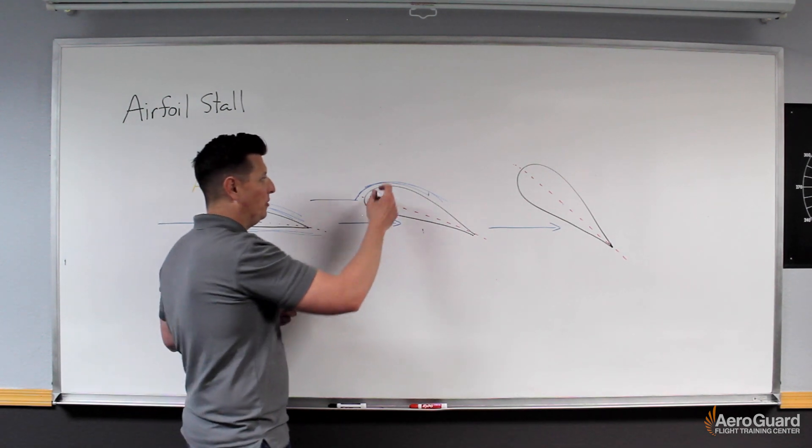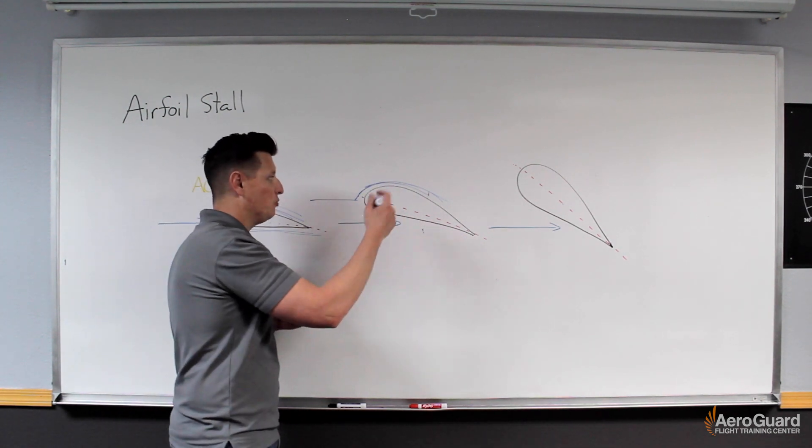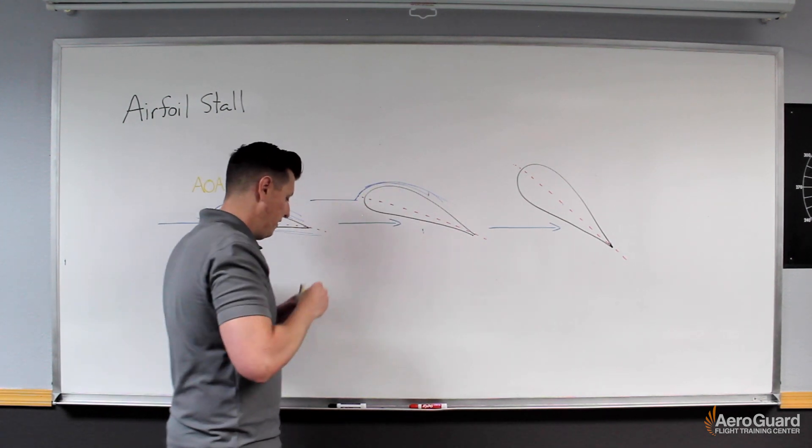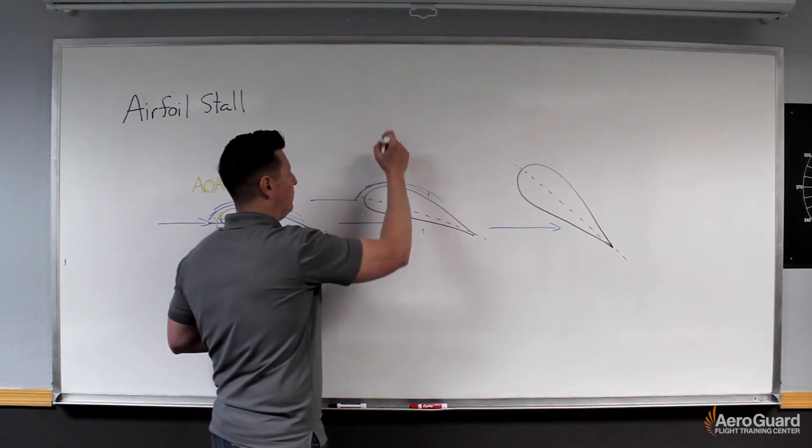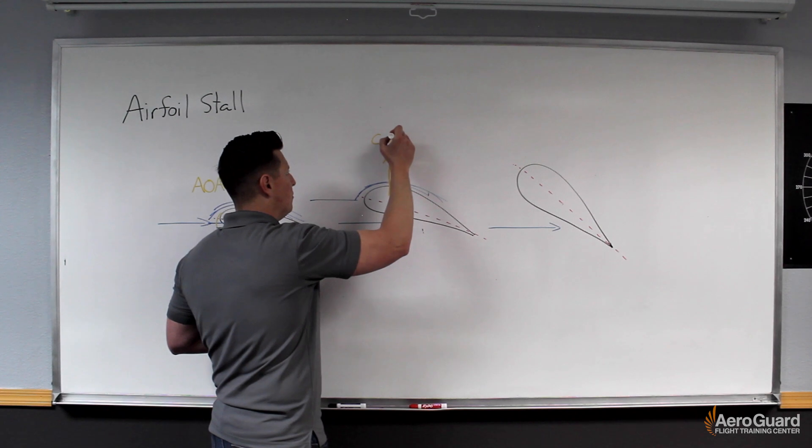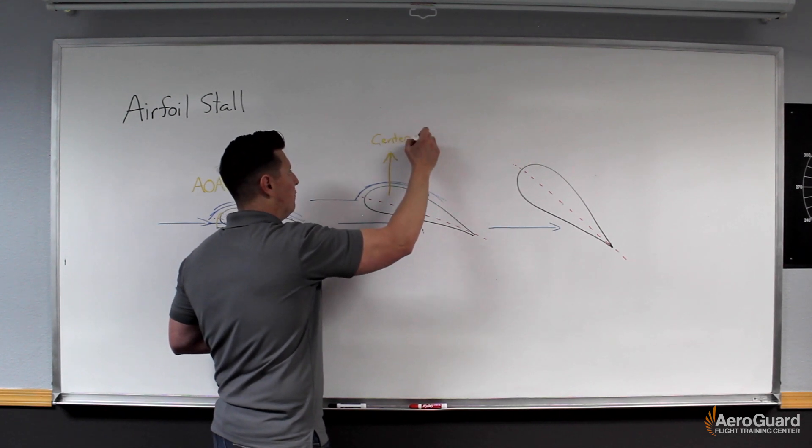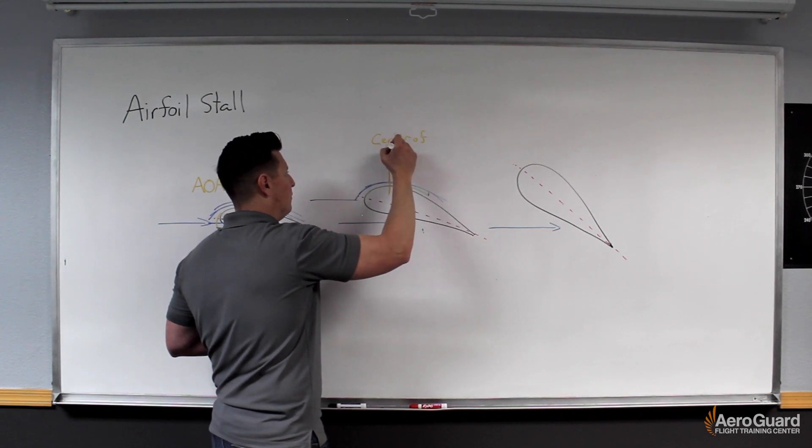Which means that ultimately we're going to produce more total lift. And as you're probably noticing, where that venturi effect is, is where the majority of that lift is produced. So we call that point the center of pressure or the center of lift.